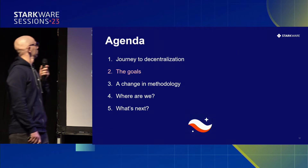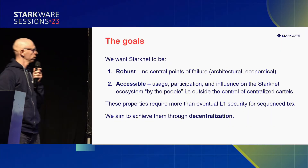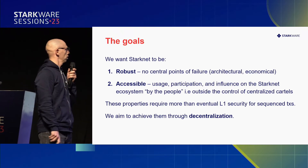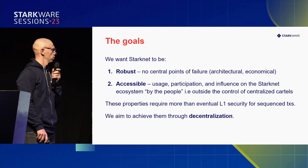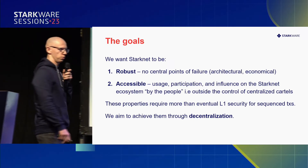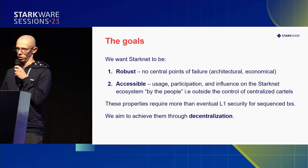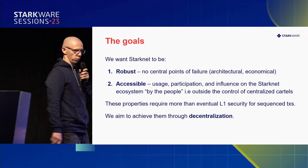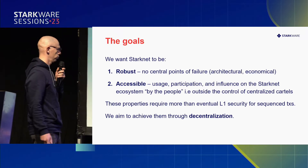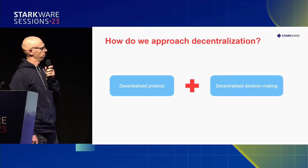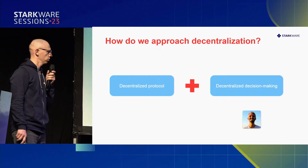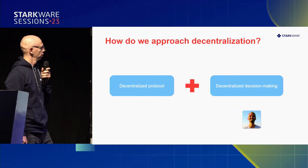So what are the goals of decentralization? The things we want Starknet to be: we want it to be robust in the sense of having as few central points of failure as possible, and we want it to be accessible — not only in the sense of being censorship resistant for transactions and users, but we want all modes of operations to be as accessible as possible. We want the sequencing layer to be accessible, we want the proving layer to be accessible; we don't want a cartel of people who may wake up in a bad mood to stop the liveness or operation of Starknet.